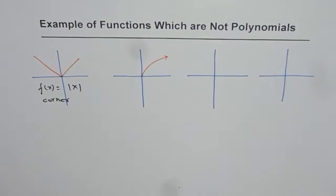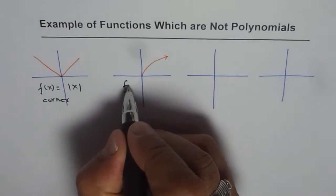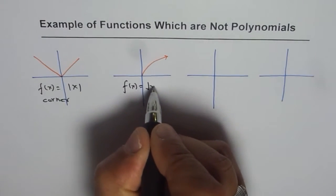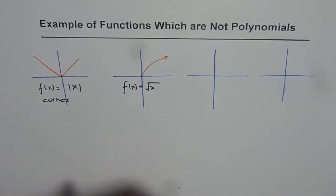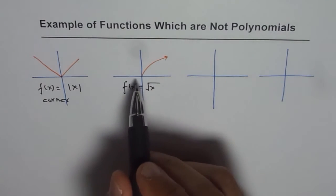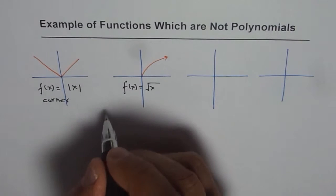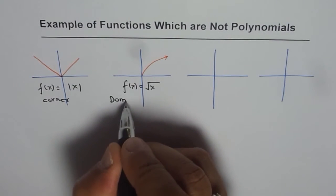Next, we have a function that looks like a square root function. We can write this as f(x) = √x. This is not a polynomial since it is not continuous over the entire domain — the domain is restricted.